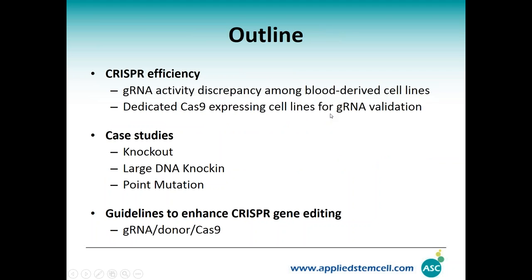This is the outline of today's talk. First we will focus on CRISPR efficiency — we tested a couple of our guide RNAs among three majorly used blood-derived cell lines and find that the guide RNA activities vary among the cells. Our solution is to have dedicated Cas9-expressing cell lines for guide RNA validations. The second part will give case studies including knockouts, large DNA fragment knock-ins, and point mutations. The third part will give guidelines and tips to enhance CRISPR editing in terms of the design of the guide RNA, donor, and Cas9.